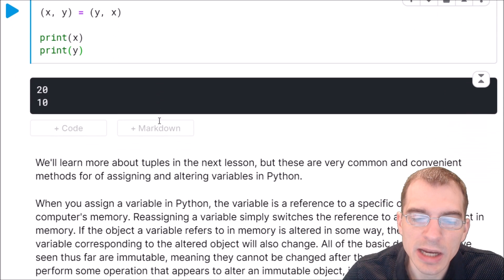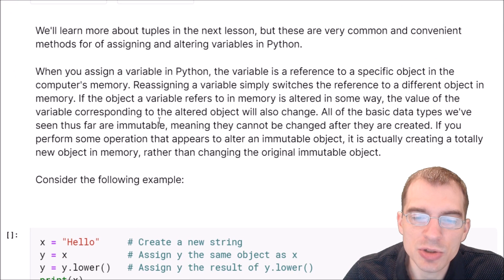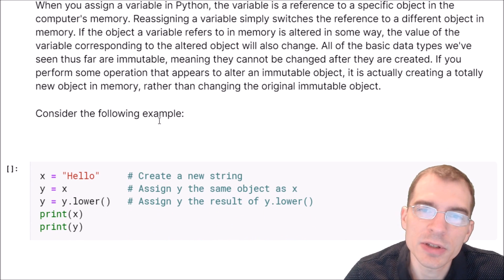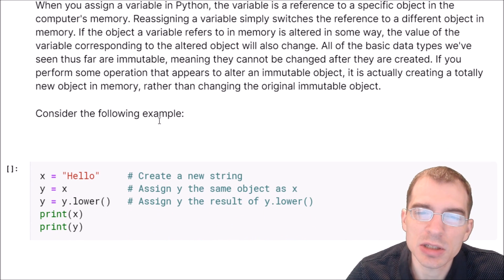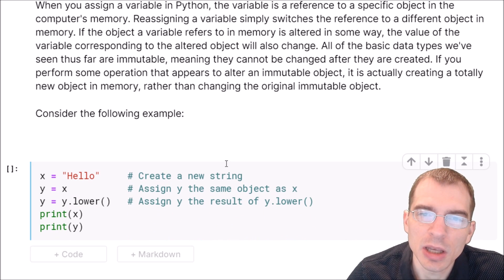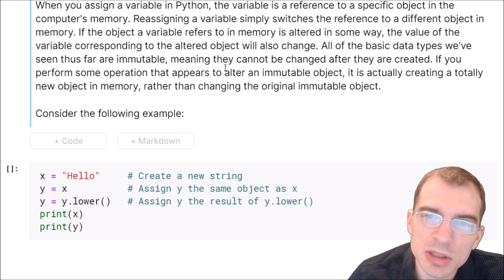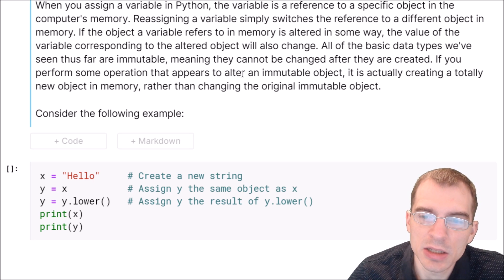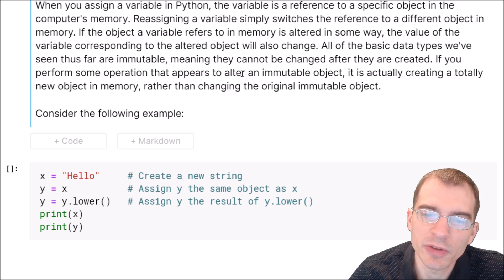When you assign a variable in Python, what you're actually doing is making a reference to a specific object in the computer's memory, and reassigning a variable actually just switches that reference to a different object in memory. If the object that a variable is referring to in memory is altered in some way, the value of the corresponding variable is also going to be altered.